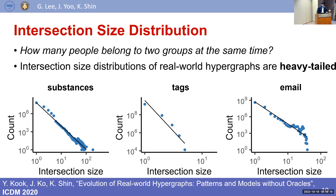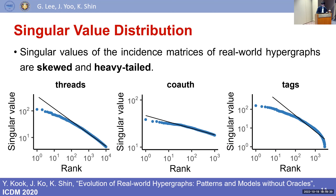How many people belong to two groups at the same time? Instead of observing individual hyperedge sizes, we look at intersection sizes between pairs of hyperedges — also observed to follow heavy-tailed power-law distributions. The last observation is singular value distributions of incidence matrices. Since the incidence matrix formulates the entire hypergraph structure, these are a hypergraph-level pattern, and the distributions are also skewed and heavy-tailed.